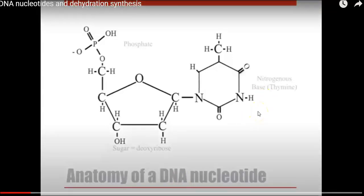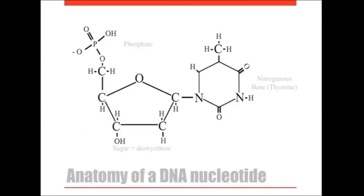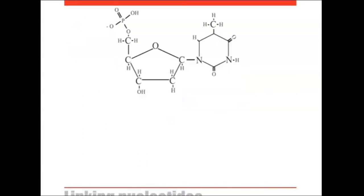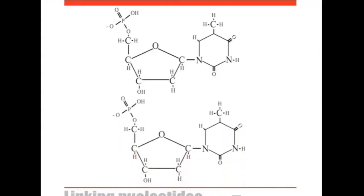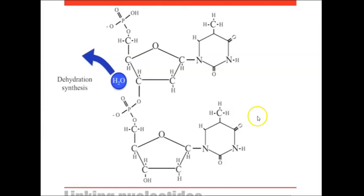Deoxyribonucleic acid is assembled from individual nucleotides. A nucleotide has three distinct parts: the phosphate group, the sugar — in this case deoxyribose — and the nitrogenous base, which could be A, G, C, or T. To link individual nucleotides, a bond must form between the phosphate group of one and the sugar group of another. The hydroxyl groups from the phosphate and the sugar combine to form a molecule of water, which is produced as the bond is formed. This process is known as dehydration synthesis because water is the byproduct.